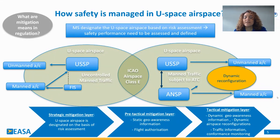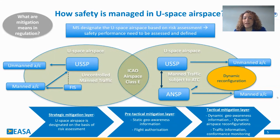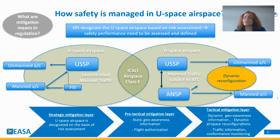As you can see, when we take the mid-air collision model of ICAO, in the strategic mitigation layer we have the U-Space airspace designated on the basis of risk assessment. In the pre-tactical mitigation layer, we have the static geo-awareness information given to the unmanned aircraft system, and the flight authorization to the unmanned aircraft operators in order to enter the U-Space airspace.